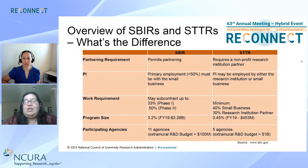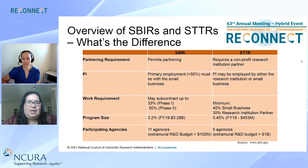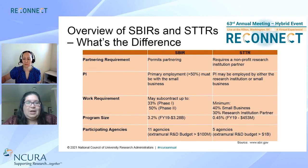The SBIR and STTR program funding is a requirement. If a federal agency's extramural R&D budget is over a million, they must set aside 3.2% to SBIR, and if it's over a billion, they must set aside 0.45% to STTR. Eleven agencies participate in SBIR — in fiscal year 2019, that was a budget of over $3 billion. Five agencies participate in STTR — in fiscal year 2019, that was over $400 million.